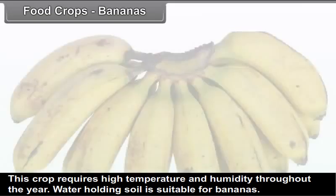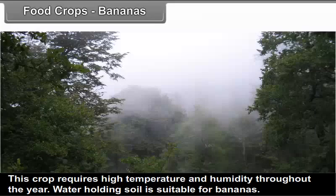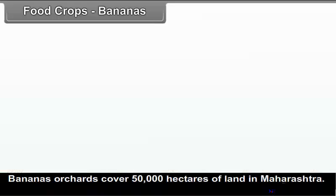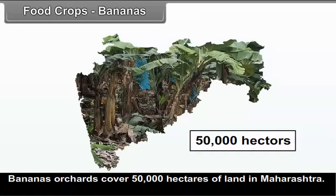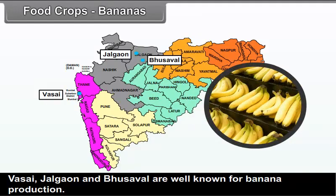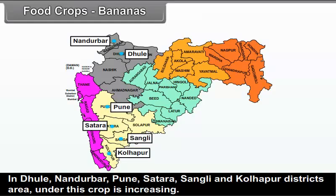Bananas: This crop requires high temperature and humidity throughout the year. Water-holding soil is suitable for bananas. Banana orchards cover 50,000 hectares of land in Maharashtra. Vasai, Jalgaon, and Bhusawal are well known for banana production. In Dhule, Nandurbar, Pune, Satara, Sangli, and Kolhapur districts, the area under this crop is increasing.